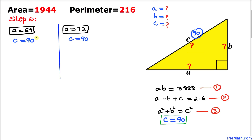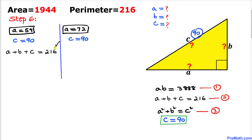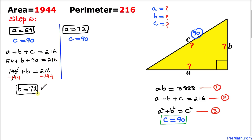Here's our final step. We got a equals 54, and we already found c equals 90. Using equation two: 54 plus b plus 90 equals 216, we find b equals 72. So in the first case, our side lengths are a equals 54, b equals 72, and c equals 90.